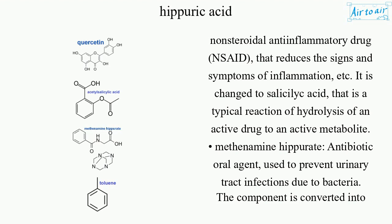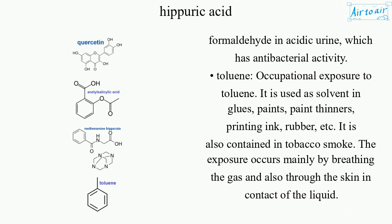Methenamine hippurate, an antibiotic oral agent, is used to prevent urinary tract infections due to bacteria. The component is converted into formaldehyde in acidic urine, which has antibacterial activity.